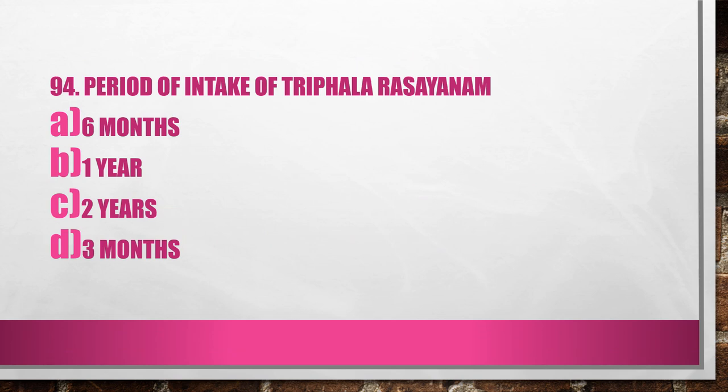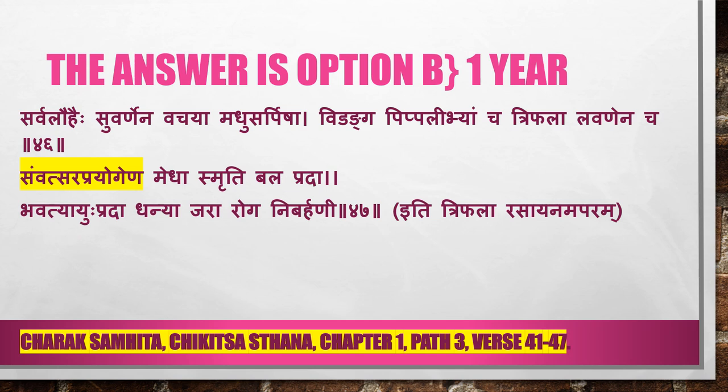Question 94. Period of intake of Triphala Rasayana: A. 6 months, B. 1 year, C. 2 years, D. 3 months. Answer is Option B, 1 year. From the verse: Sarmalauhehi, Suvarnena, Vajaya, Madhusarpisha, Vidanga, Pippa, Triphala — Sarmavatsaraprayokena Medhasmrithi Balapratha — meaning it should be used for 1 year. Reference: Charaka Samhita Chigilsastana Chapter 1, Part 3, Verse 41 to 47.